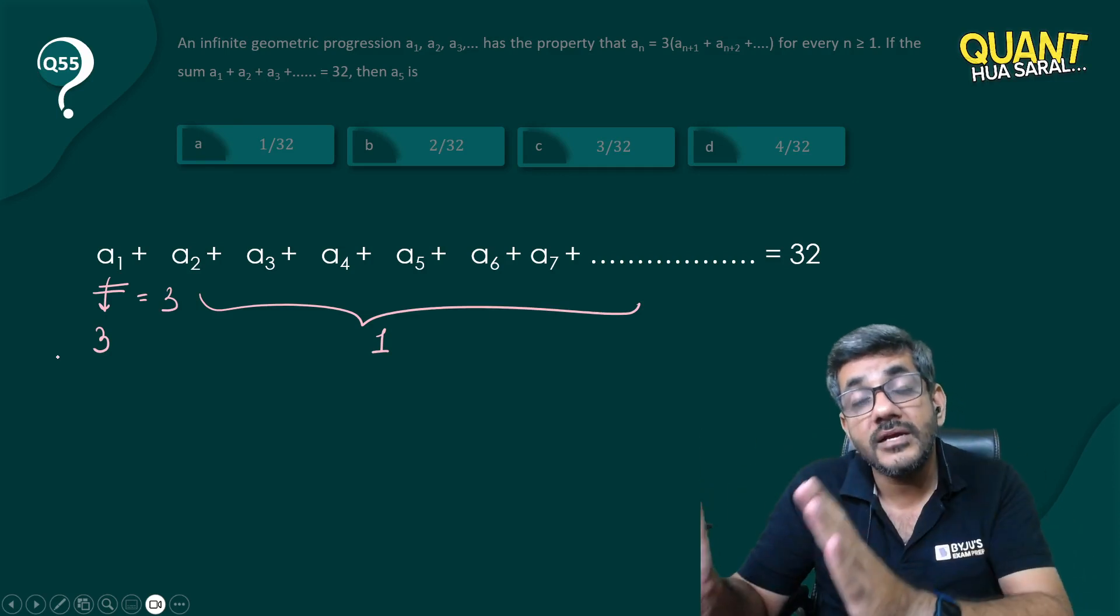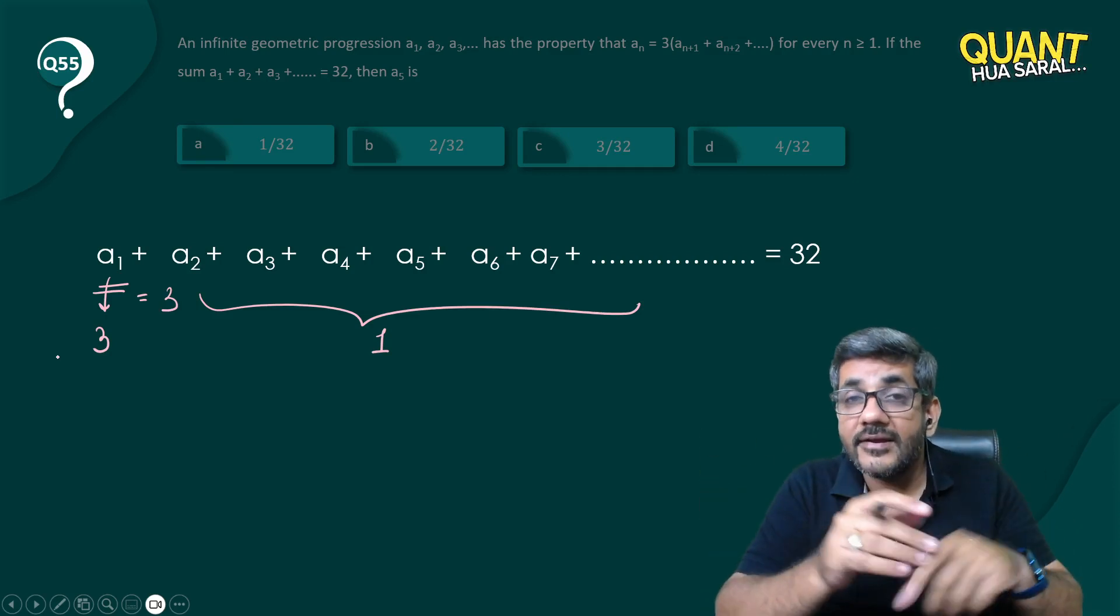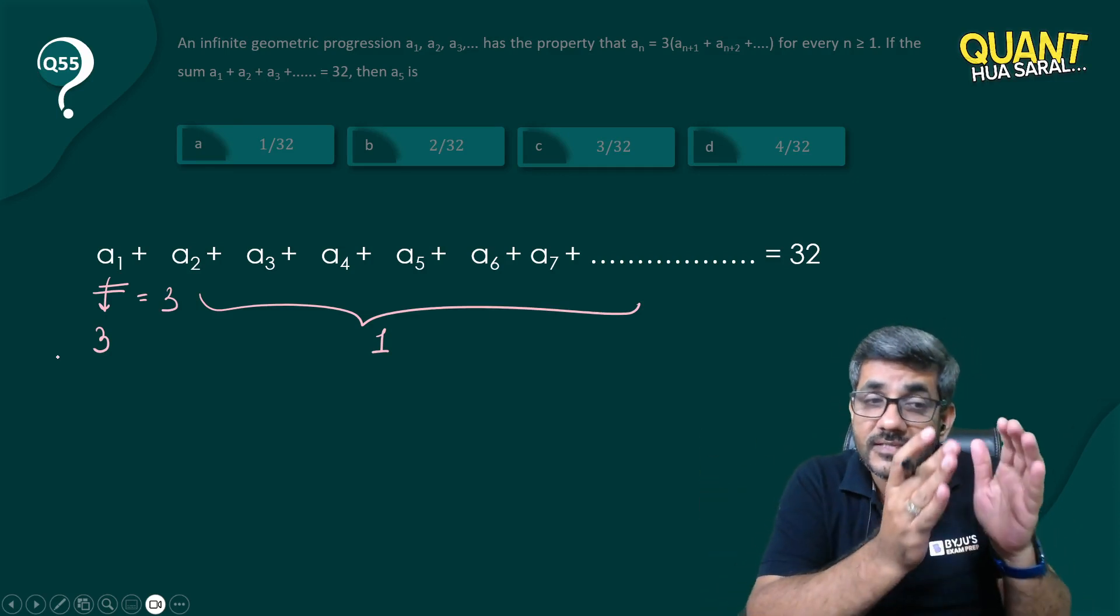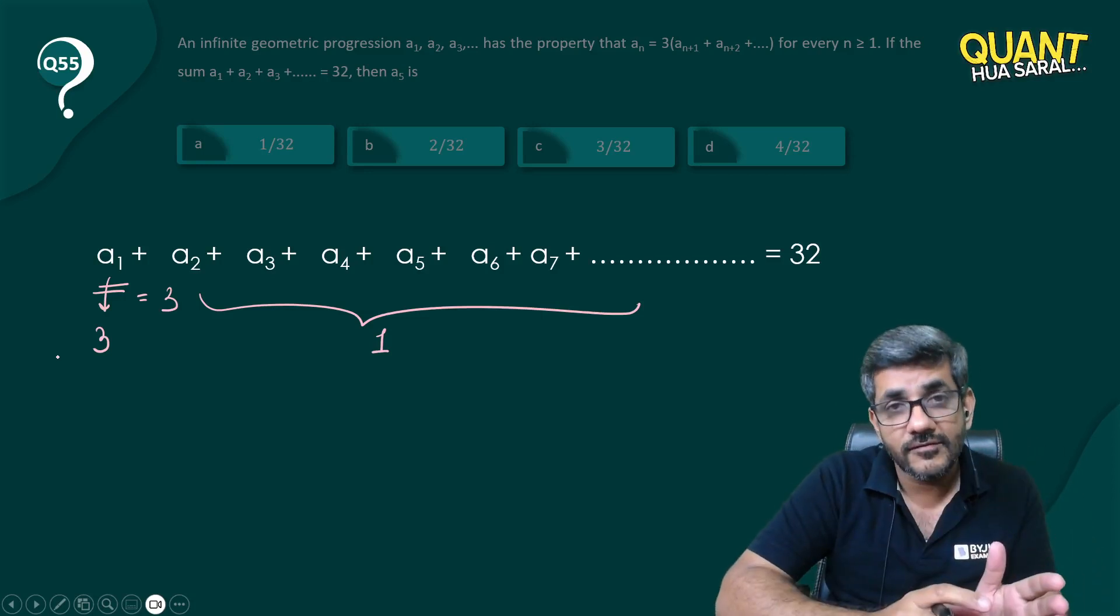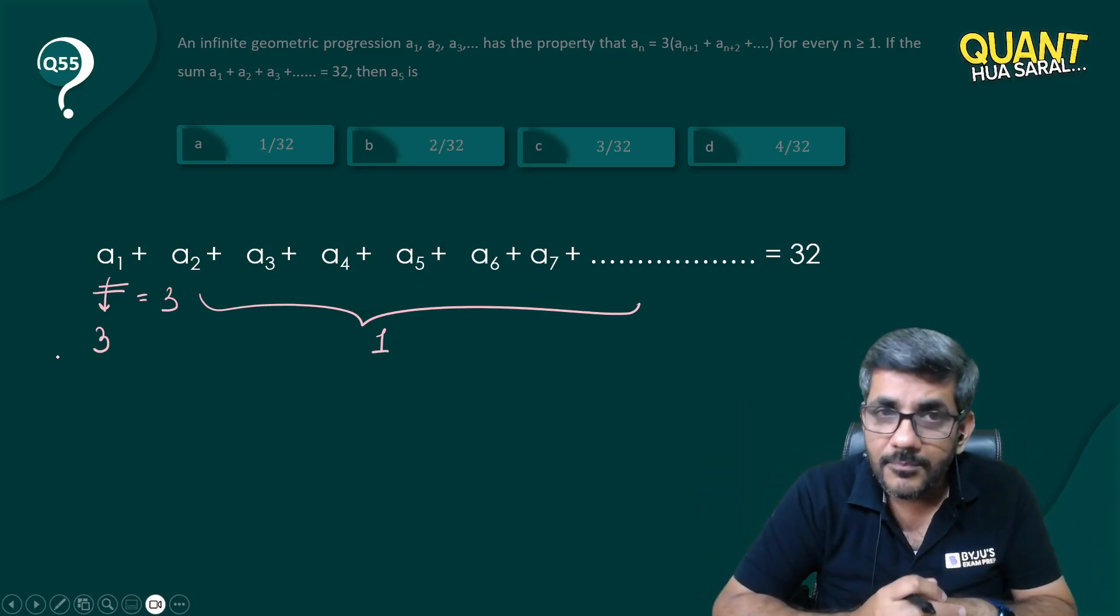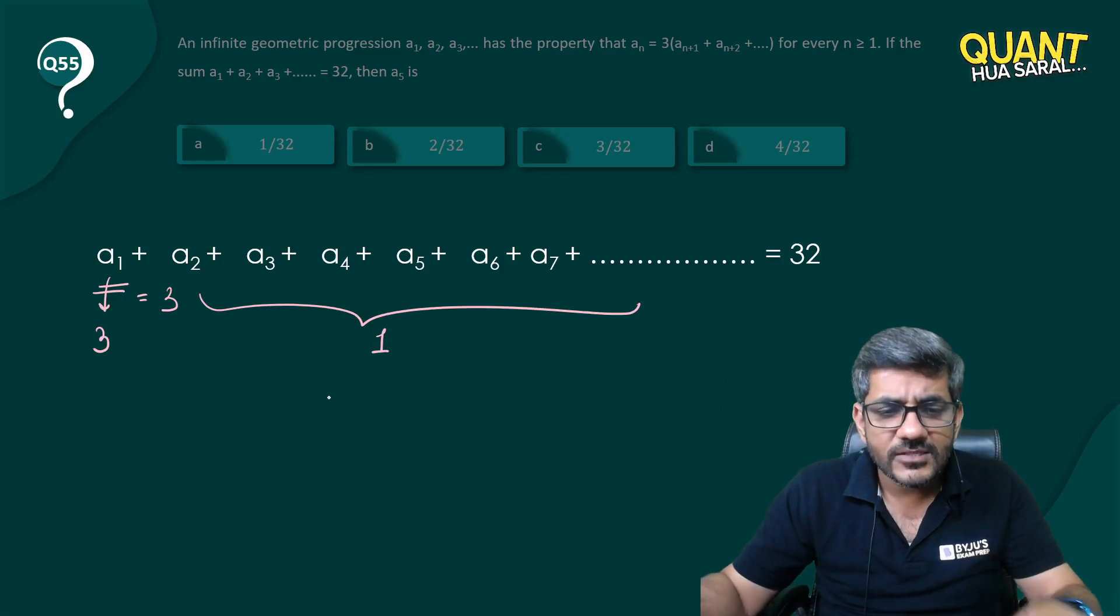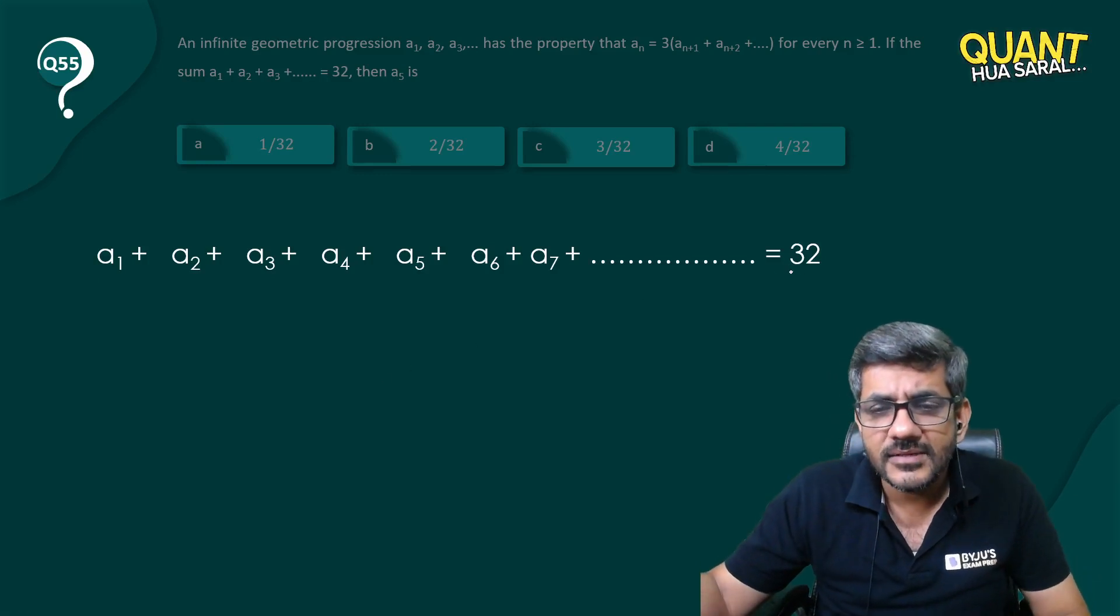If the sum of all upcoming terms is one, then that term is equal to three. That means every term is actually thrice of the sum of all the upcoming terms. So in that case, what can we say here? The total sum is given as 32.